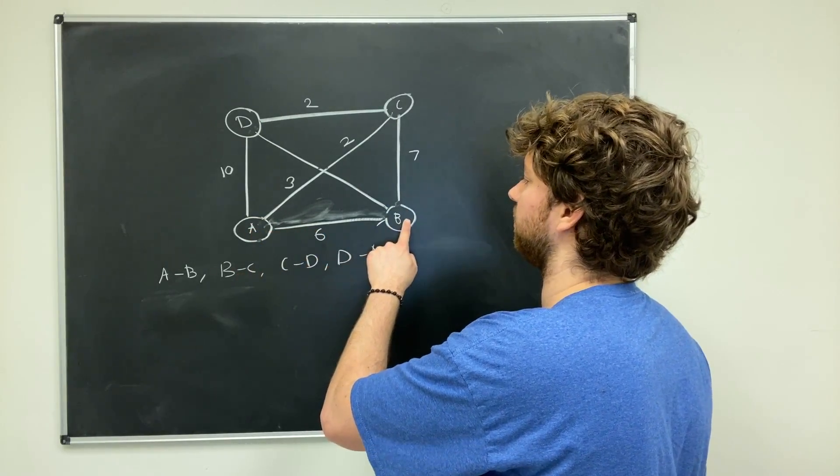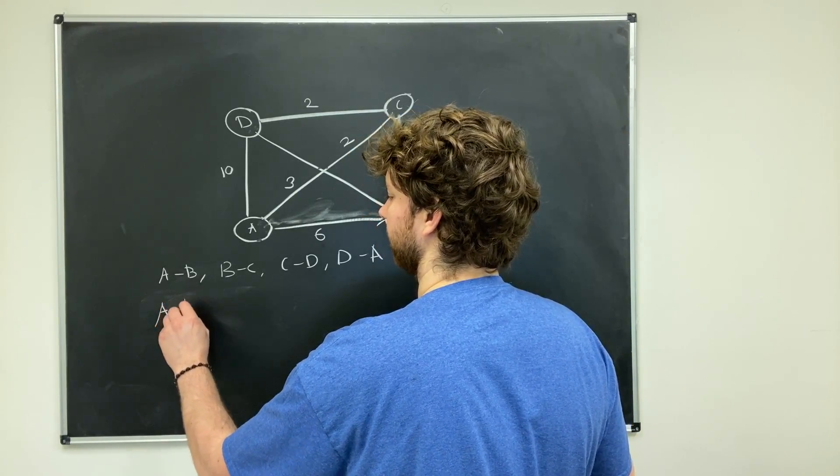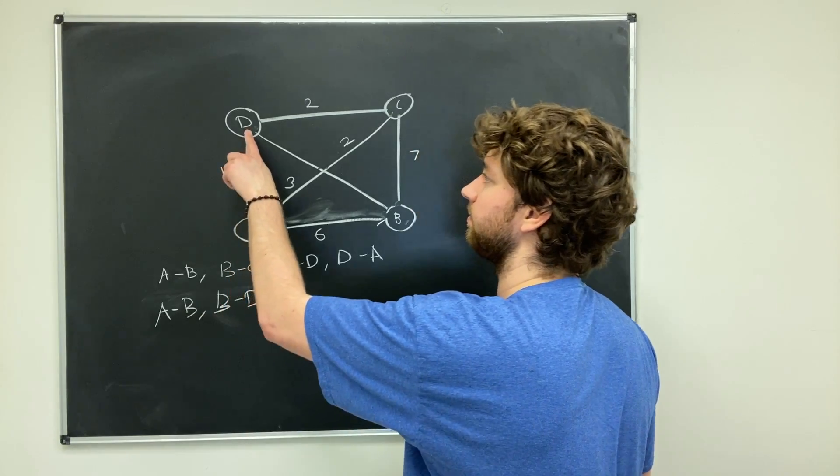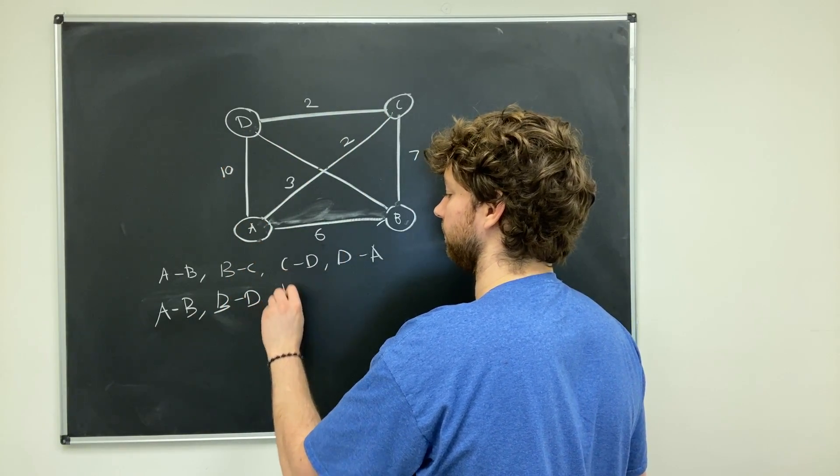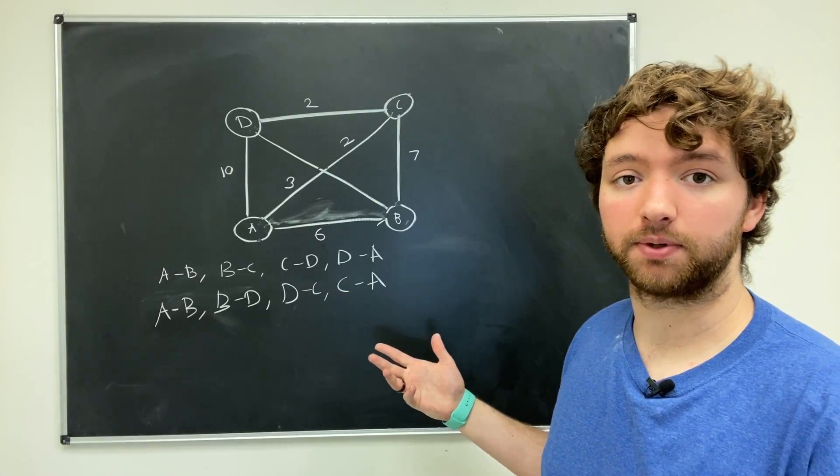But now instead of going from B to C, I want to go to D. So it's going to look like this. We start at A and go to B, then we go from B to D, then from D to C, and then C back to A. That is the next path we could do.